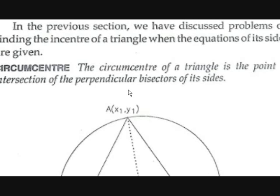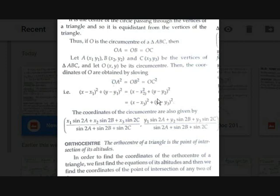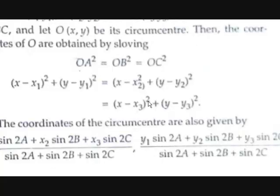The circumcenter is the center of the circle which passes through all the vertices. You can also say that instead of it being the meeting point of perpendicular bisectors, it is the center of the circle passing through all the vertices of a triangle. This means it is equidistant from all the vertices: OA = OB = OC. Using the distance formula with vertices (X1, Y1), (X2, Y2), (X3, Y3), we get (X − X1)² + (Y − Y1)² = (X − X2)² + (Y − Y2)² = (X − X3)² + (Y − Y3)².